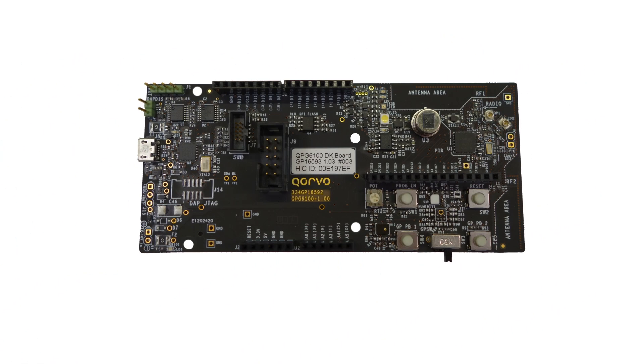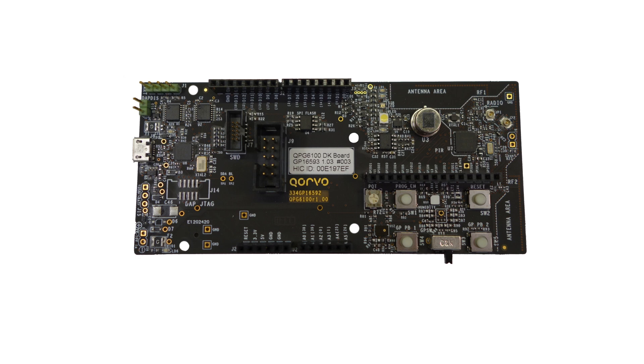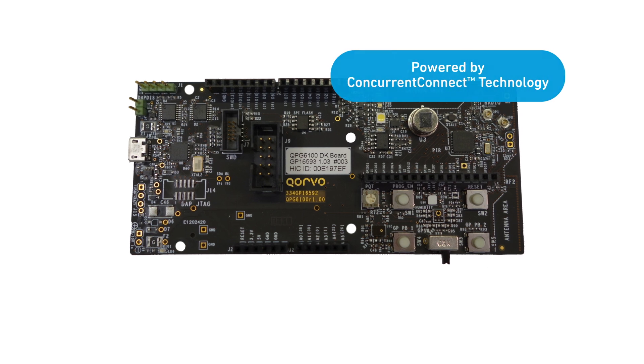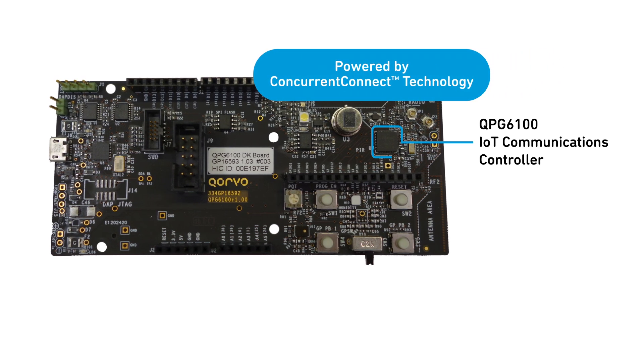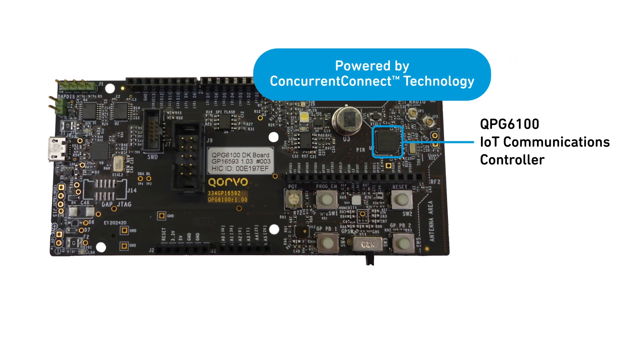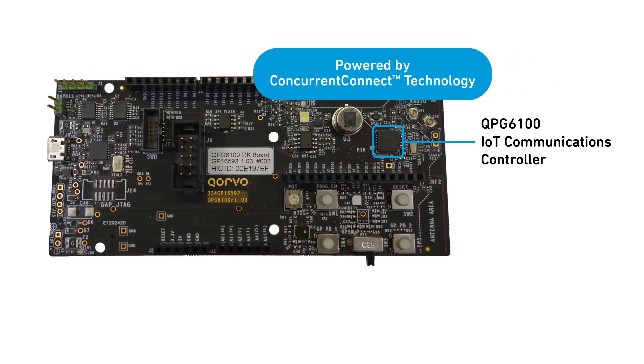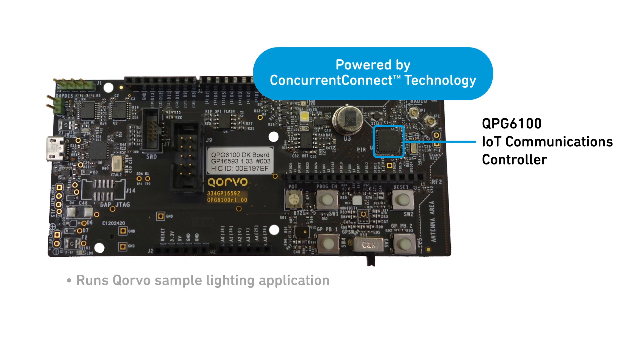Let's look at how this works on actual hardware, using the QPG6100 development kit, running Corvo's sample lighting application.